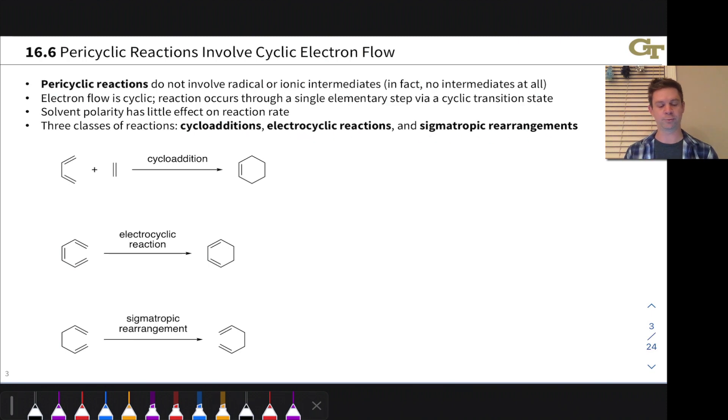In a cycloaddition, two distinct pi systems—not necessarily in two separate molecules, but distinct from each other—add to each other to form a ring. This is a cycloaddition. In this particular example, the electron flow looks like this, and we can see that electrons are moving around in a circle. We can start here, for instance, but then electrons come around and shift to get back to the point where we started: cyclic electron flow.